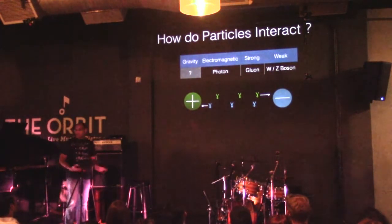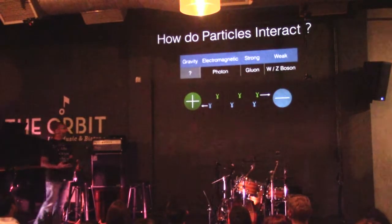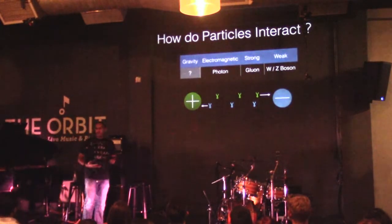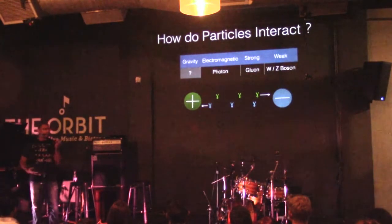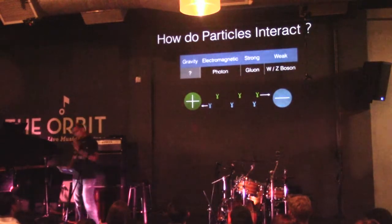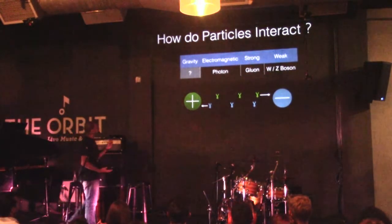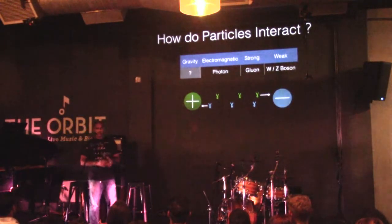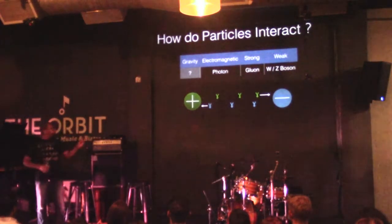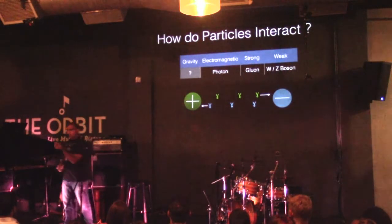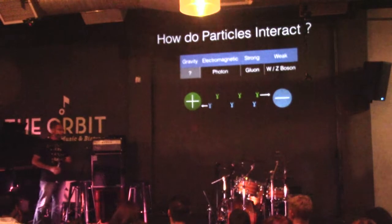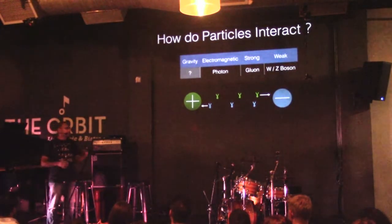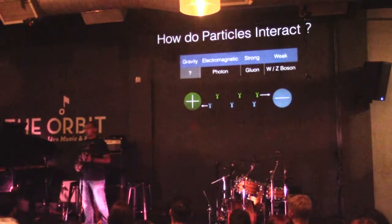Gravity is an interaction between matter particles. Electromagnetism is the force between positive and negatively charged particles. The strong force is the force between the quarks that holds them together inside protons — we know it's strong because these protons are in a very small space and they're positively charged, so they should be flying apart. But the strong force inside the proton holds the quarks together, and the remnants of that force — the little leftover bits — are so strong that they overcome the electromagnetic repulsion. That's why it's called the strong force.